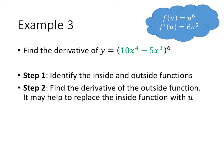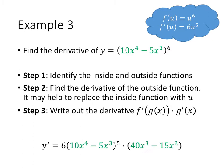So the derivative of that u⁶ is 6u⁵. And now we just need to substitute in for our chain rule. So we take that derivative of the outside function, 6u⁵, and we substitute in our inside function for the u. So it's 6 times (10x⁴ - 5x³)⁵. And then we multiply by the derivative of that inside function.